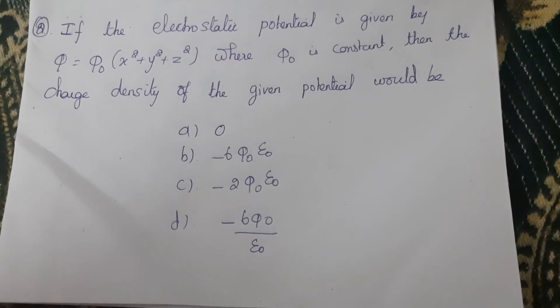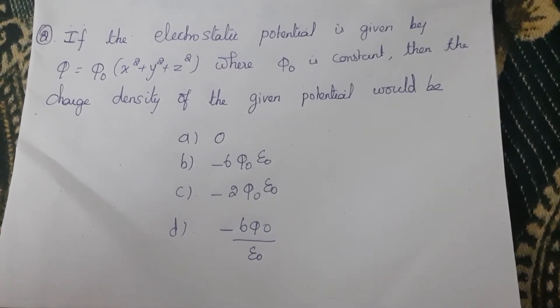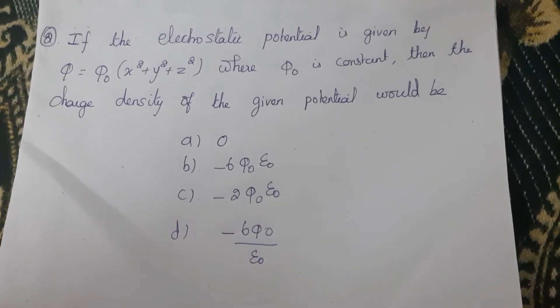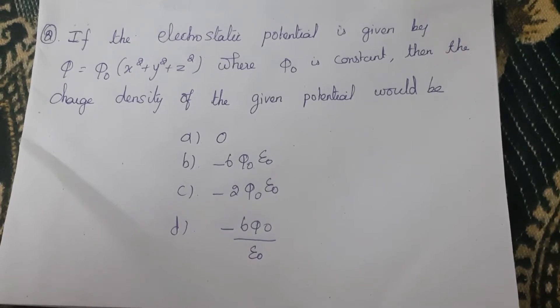Second question: If the electrostatic potential is given by φ = φ₀(x² + y² + z²) where φ₀ is constant, then the charge density of the given potential would be: